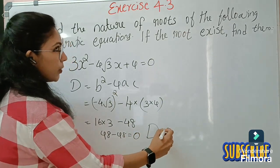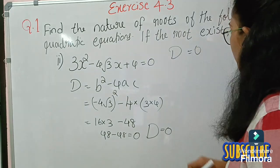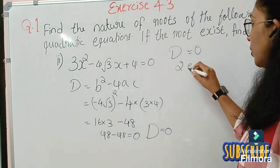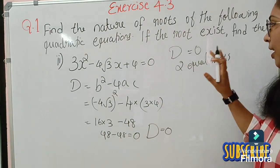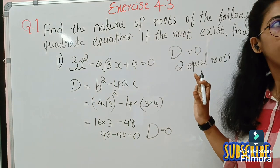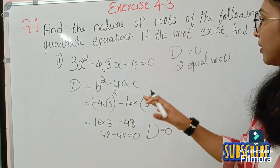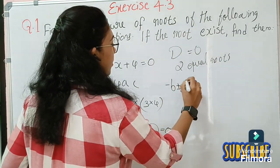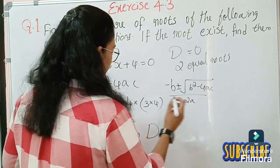D equals 0, which means there are two equal roots. So for this case two equal roots exist. Now we find the roots using the formula: x = (−B ± √(B² − 4ac)) / 2a.